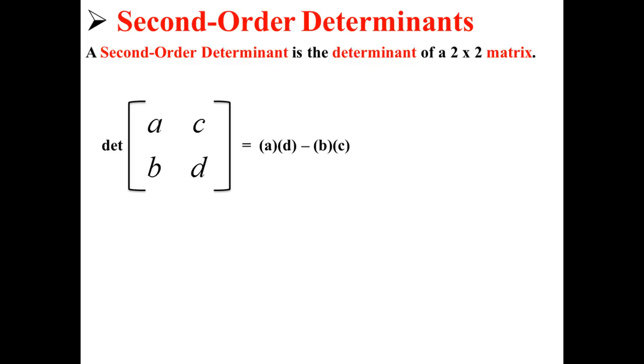Here we have a matrix with elements A, C, B, and D. The determinant of this matrix is equal to A times D minus B times C.